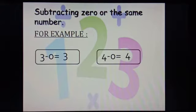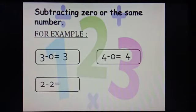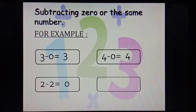4 minus 0 is 4. The next example is 2 minus 2. Tell me, what is the answer for it? Yes, 2 minus 2 is 0. And in the last example, we have 6 minus 6. So, it is 0.